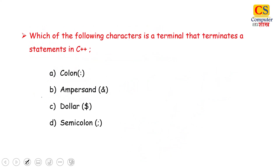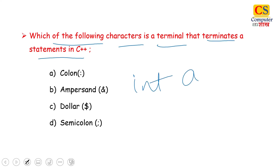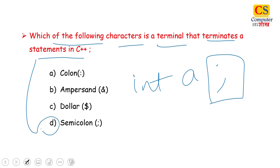Next question: Which of the following characters is a terminal that terminates the statement in C++? In C++ there is a specific statement terminator. The right answer will be option D — the semicolon.